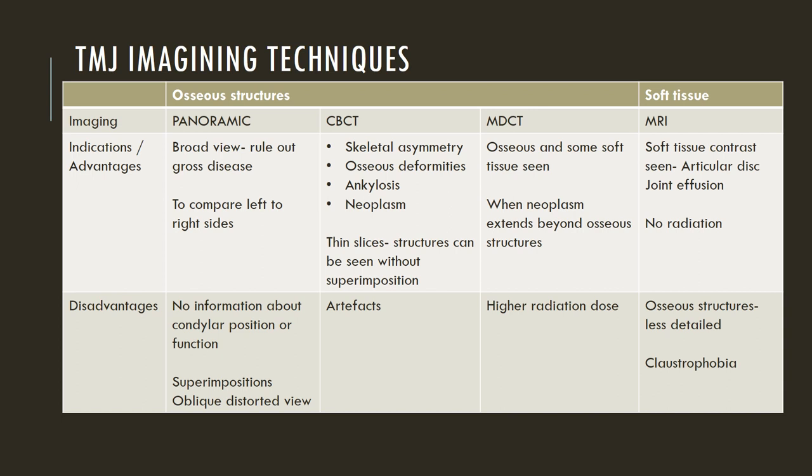The disadvantage of multi-detector CT is the higher radiation dose involved. When it comes to MRI, soft tissue contrast is the best, especially when viewing the articular disc or joint effusion. The advantage of MRI is that there is no radiation involved, but the osseous structures are not as detailed, and patients wearing pacemakers or those with claustrophobia are at a disadvantage with MRI.